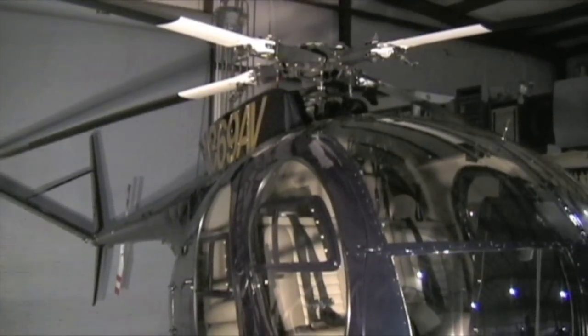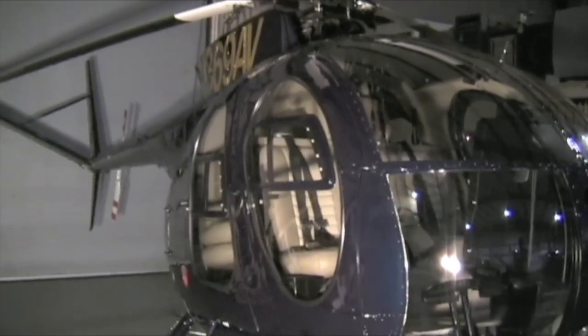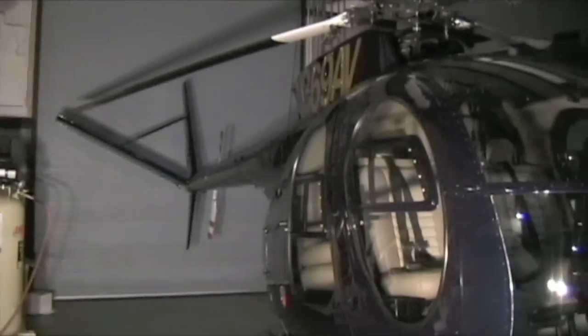All right, so here we are. We're going to do a pre-flight inspection of a 1970 MD-500. This is a C model. You can tell by the V-tail in the back.